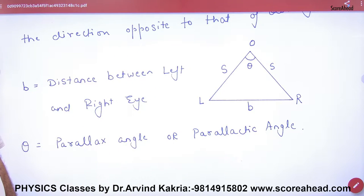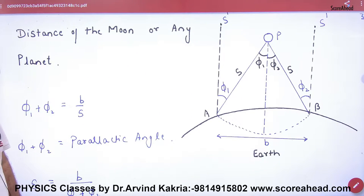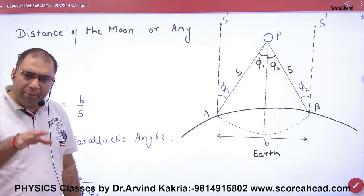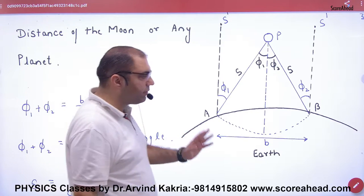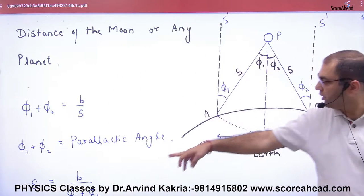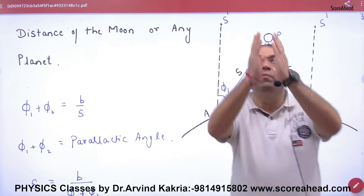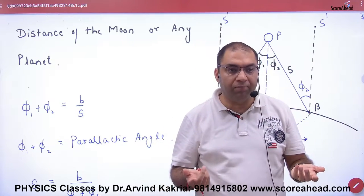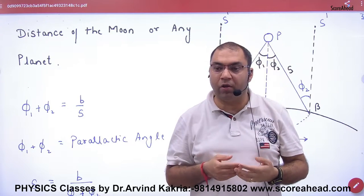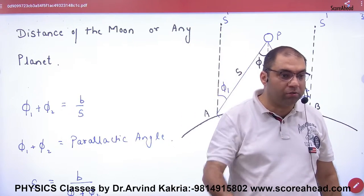Now, with the parallax method, we will approximate the distance of the moon. Think of this as the Earth. If I see the moon from here, I need to find the parallax angle — I don't directly measure the moon's distance; I measure the parallax angle.